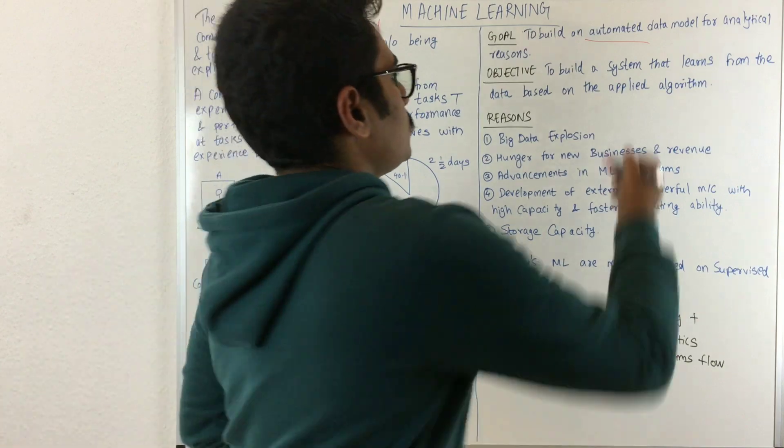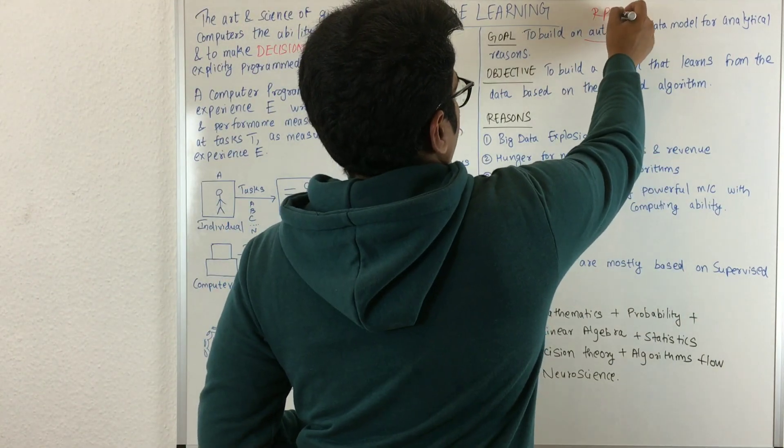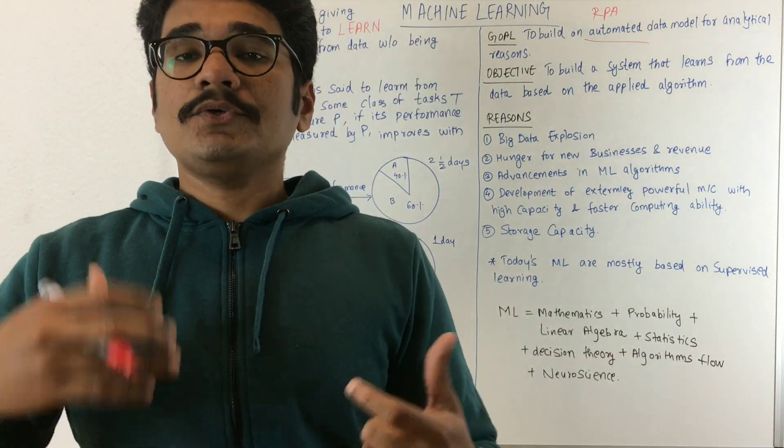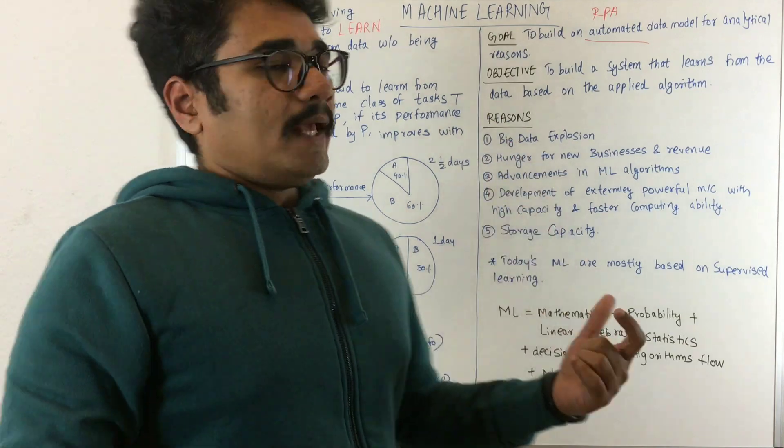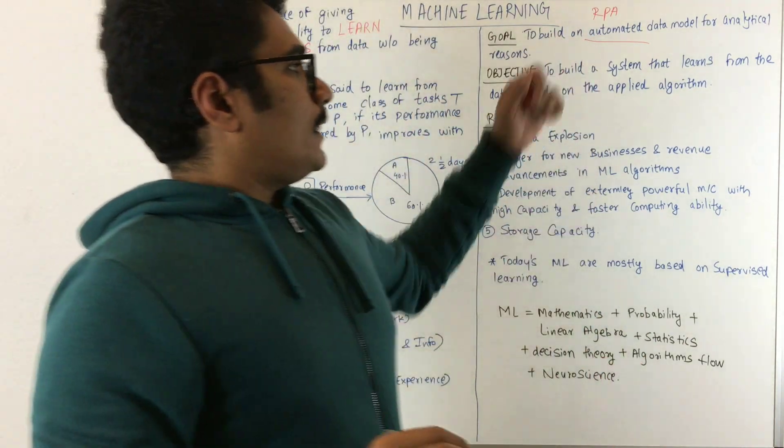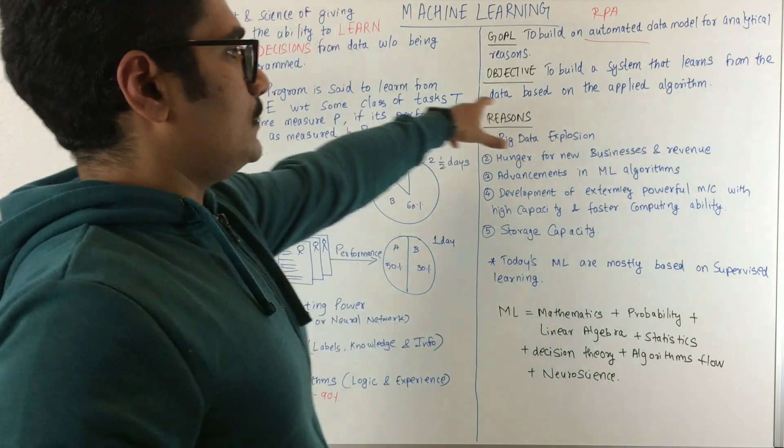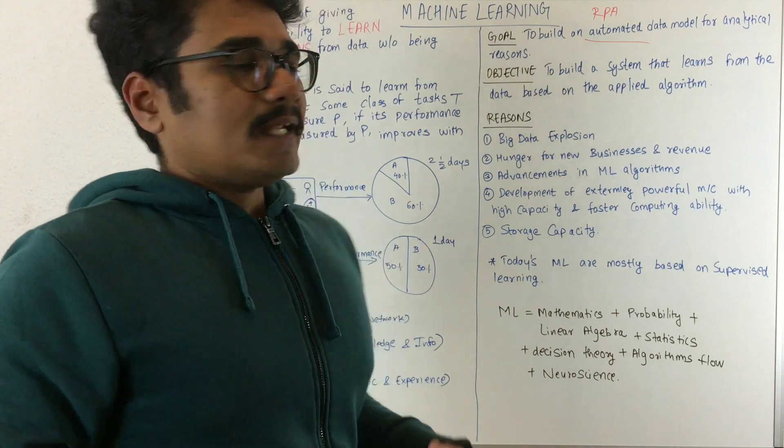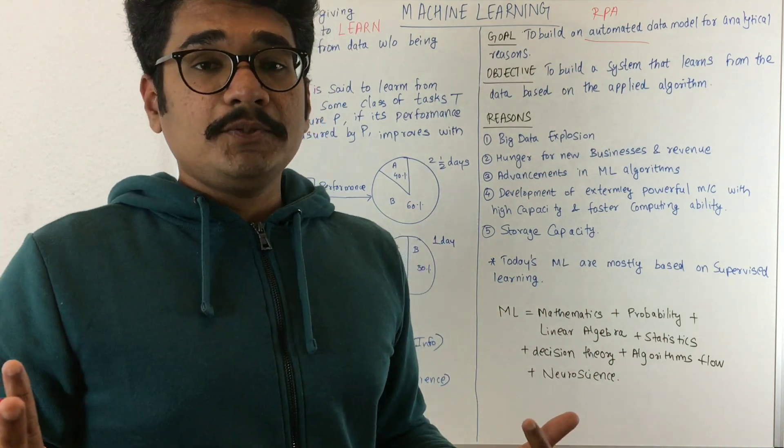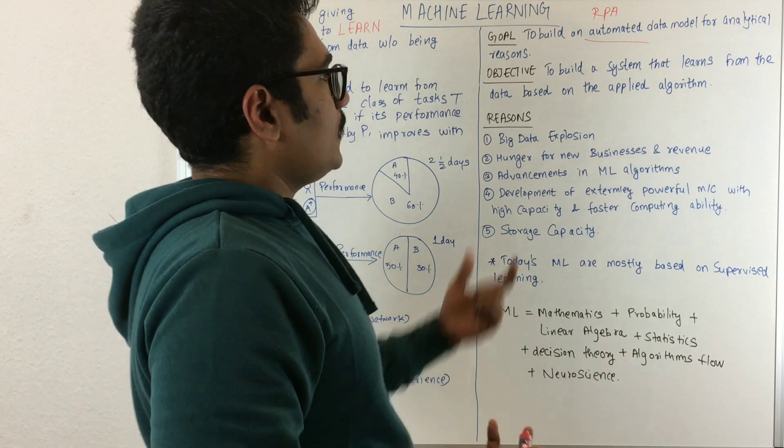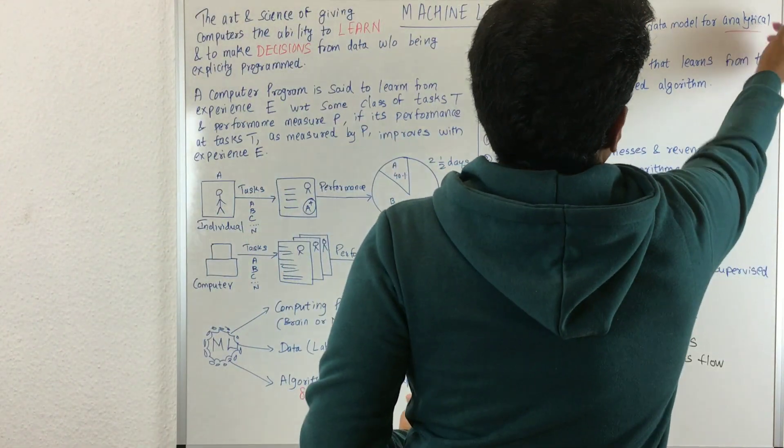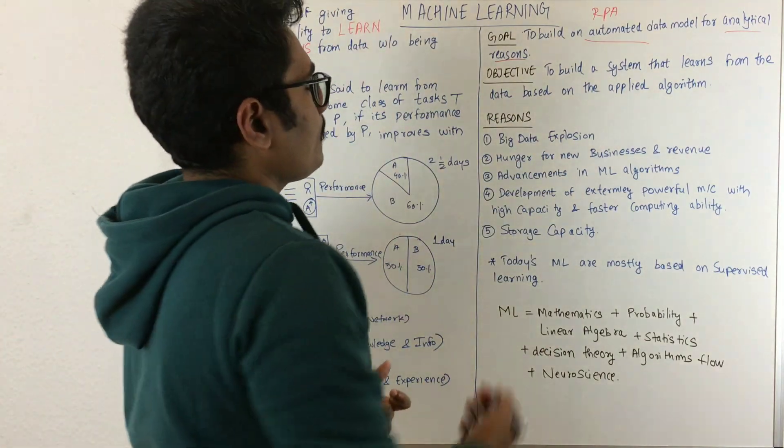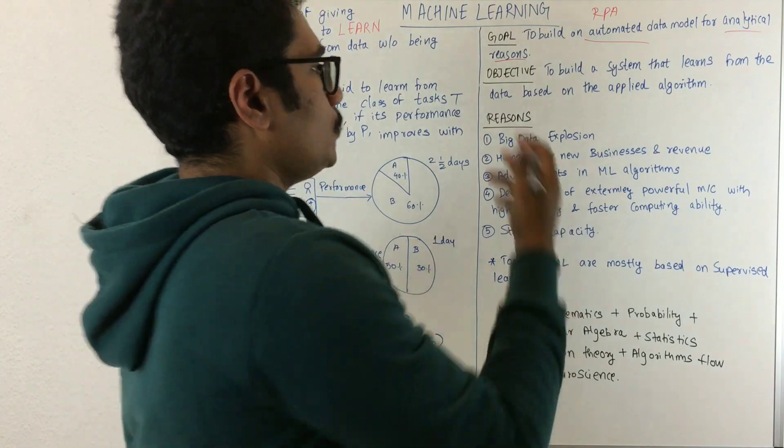The goal is to build an automated data model for analytical reasons. Automated means whatever task was earlier done manually should now be automated. For example, if one individual has to stay overnight to do a task, with a computer program that task is automated. That comes in RPA—robotic process automation. That machine will execute all test cases, eliminating a particular individual.